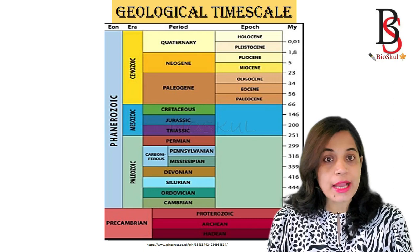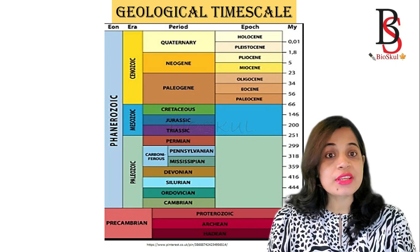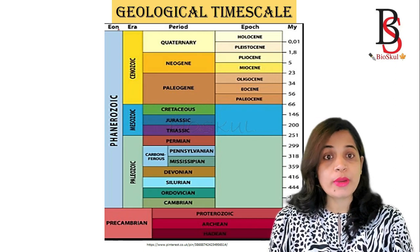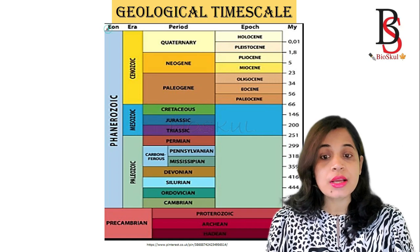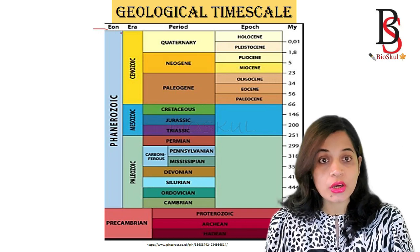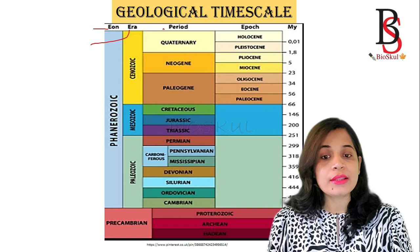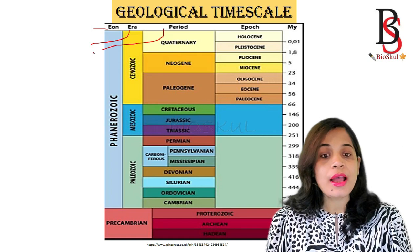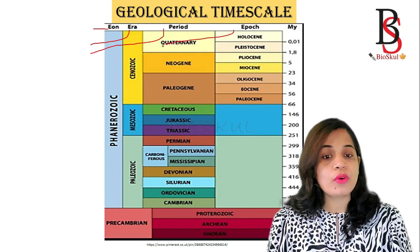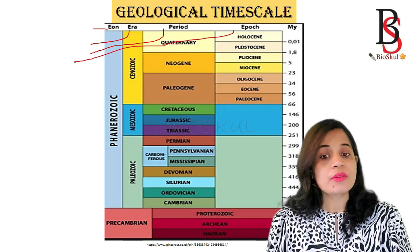This is the geological time scale, and it is divided into four major divisions. The first and largest is known as the eon, followed by the era, then the period, and the fourth one is known as the epoch.